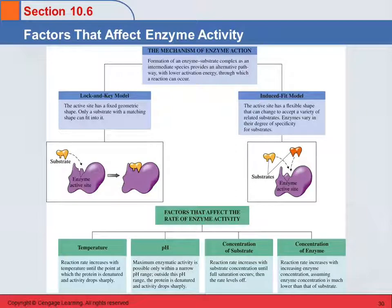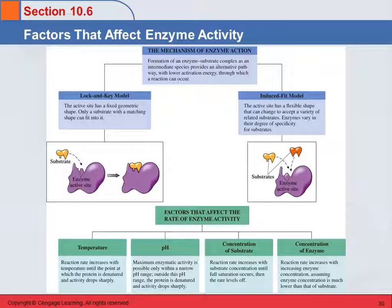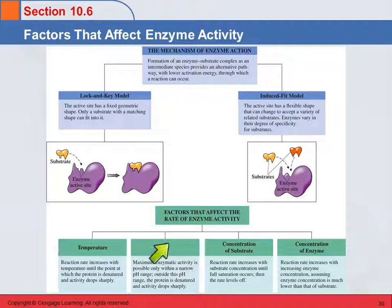Here's an overview of the mechanism. The lock-and-key model is where the substrate fits in like a Lego brick. The induced fit model is where, when the substrate comes in, the enzyme active site actually bends a little bit. And here's a summary of the four main factors that affect the rate of enzyme activity: temperature, pH, concentration of substrate, and concentration of enzyme.